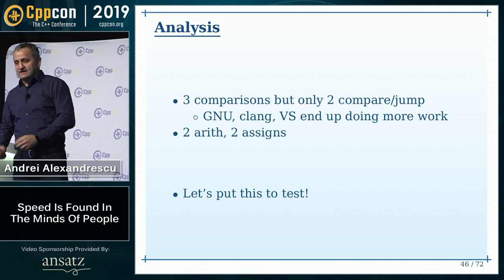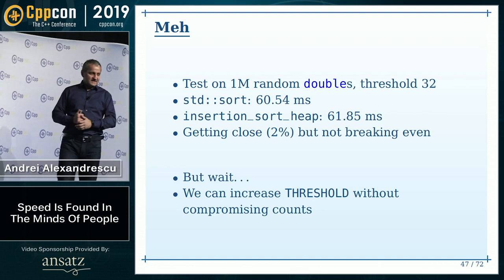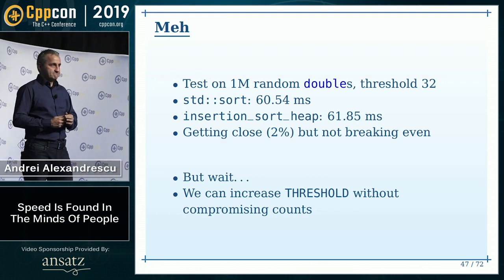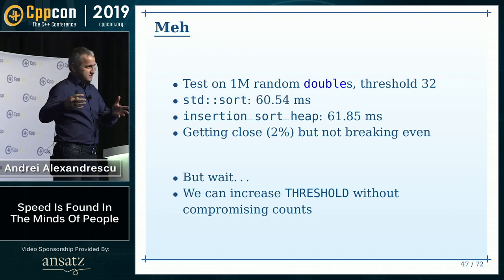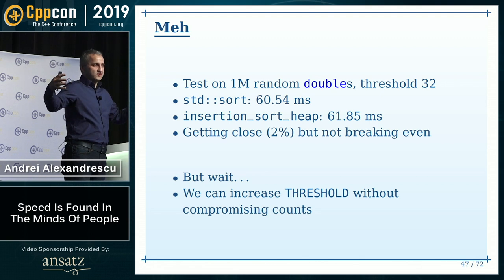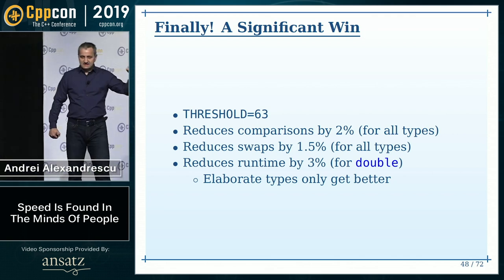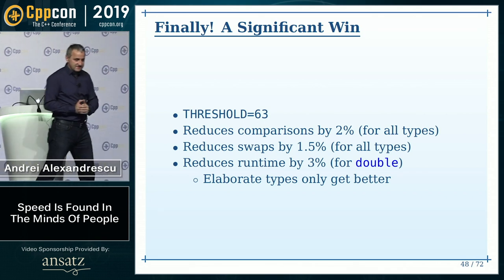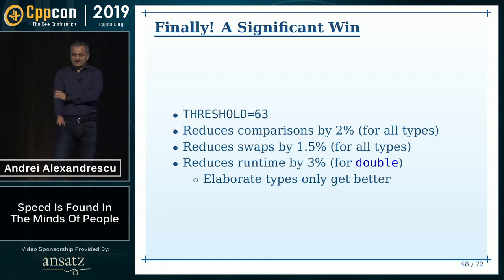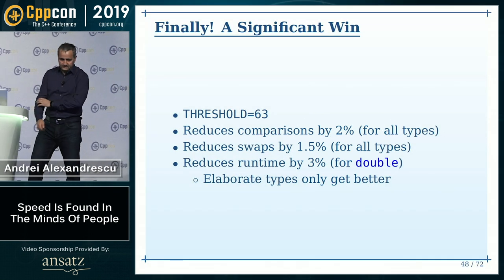In the inner loop we have three comparisons but only two comparison jumps. Two arithmetic operations and two assignments. Let's put this to the test. We're getting close — within 2% of the baseline. But now we reduced swaps and comparisons, so we can increase the threshold. We can increase the size of the small arrays we're sorting. And finally, after millennia of work, we got it. If you set the threshold to 63, you enjoy a 2% win. All metrics are better, including time. Elaborate types get even better because they have more expensive comparisons and swaps. Double is kind of the worst case.